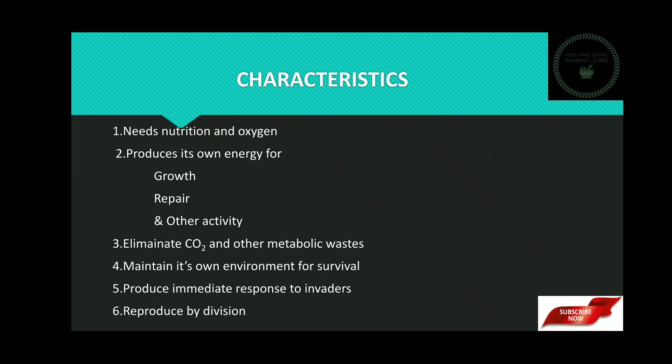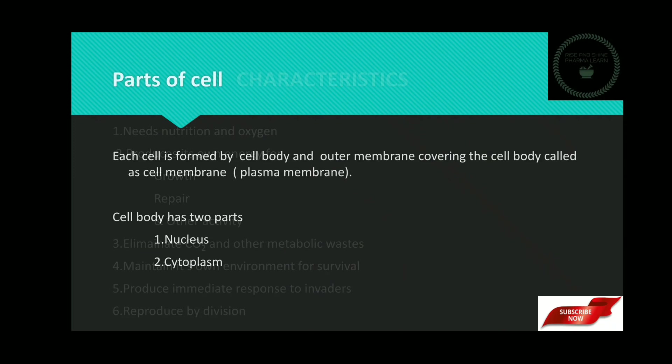Now we are seeing about the parts of cell. Each cell is formed by the cell body and an outer membrane covering of the cell body, which is known as a cell membrane. Basically cells have three parts: cell membrane, cytoplasm, and the nucleus. In this, cytoplasm and the nucleus are the parts of the cell body.